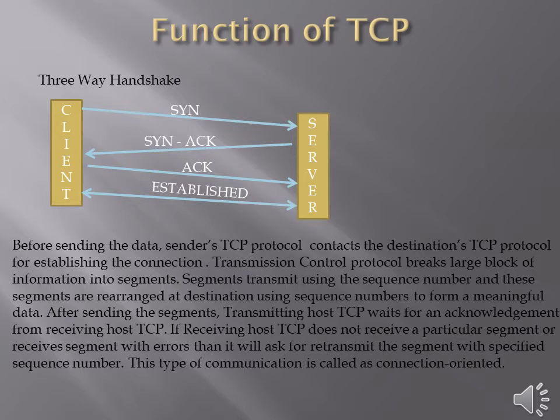TCP always follows a 3-way handshake, which is why it is called a reliable and connection-oriented protocol. In the figure, you can see the client sends a SYN to the server. The server then sends an acknowledgement. The client sends an acknowledgement back, and the connection is established with the server.